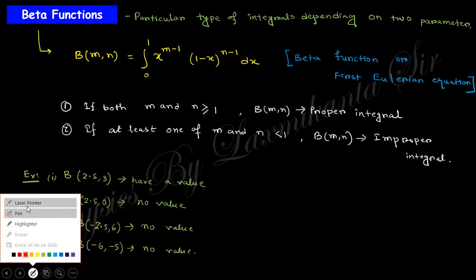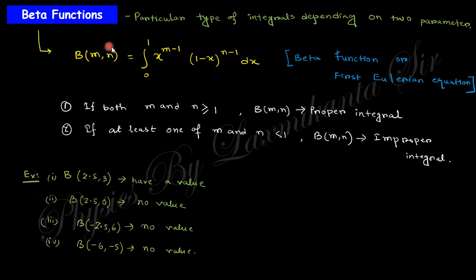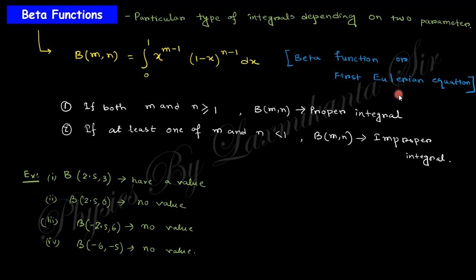First we come to the beta function. The beta function is related to a particular type of integral depending on two parameters. Beta(m, n) is defined as the integral from 0 to 1 of x^(m-1) (1-x)^(n-1) dx. This is known as the beta function or the first Eulerian integral. You need to remember that m and n must both be greater than or equal to 1; otherwise this is an improper integral.